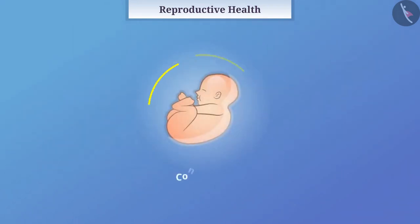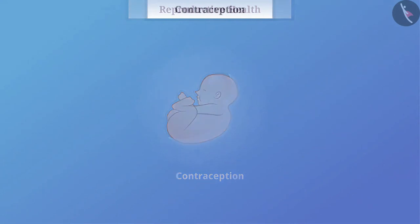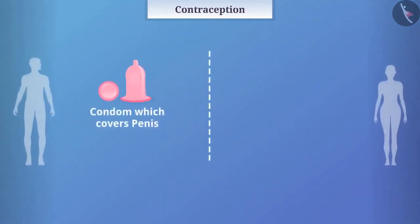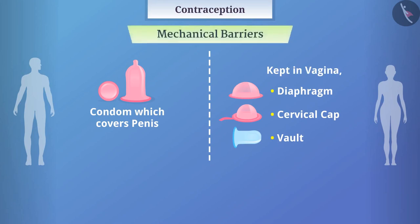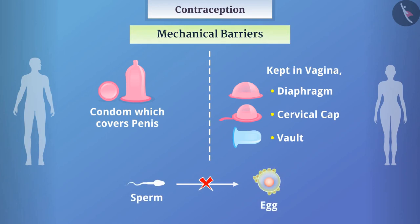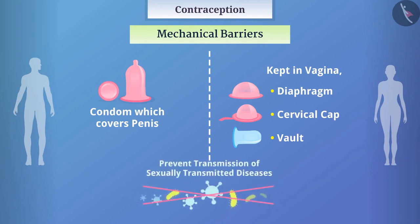Various solutions of contraception have been discovered to solve these problems. Condoms which cover the penis, and devices such as the diaphragm, cervical cap, vault, etc., which can be kept in the vagina, are several devices made of rubber called mechanical barriers. They prevent sperm from reaching the egg, due to which pregnancy can be avoided. These barriers also help to prevent transmission of sexually transmitted diseases.